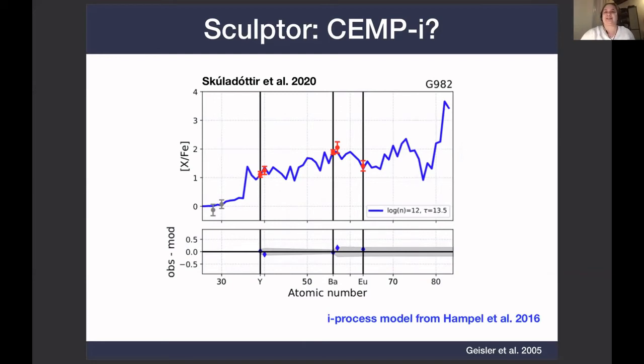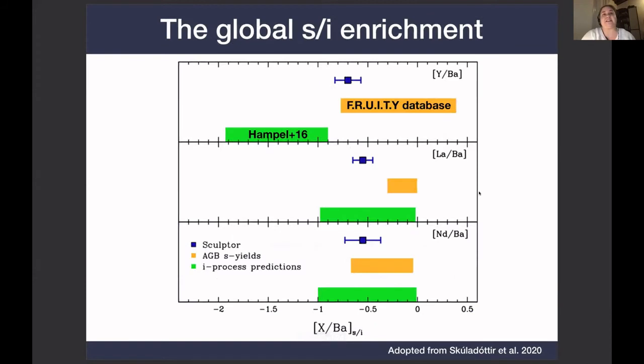But we are not completely helpless even so, because we can still learn a lot about processes, not only from individual stars, but also from the overall enrichment of the galaxy. So what we did here is that from a sample of 100 stars in Sculptor, we measured the global enrichment of neutron-capture elements, and then subtracted the r-process.